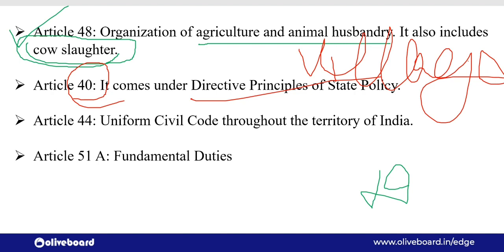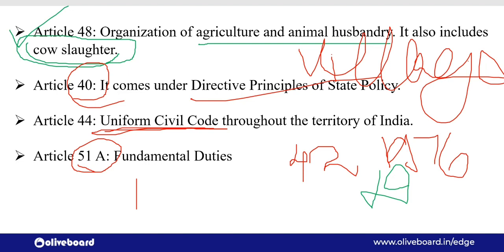Article 44 — very very important — uniform civil code के बारे में बात करता है, कि हमारी country में एक तरीके का कानून होना चाहिए हर किसी के लिए। Article 51A — यह 42nd amendment 1976 में add किया गया था — और total जो fundamental duties हैं वो हैं 11।